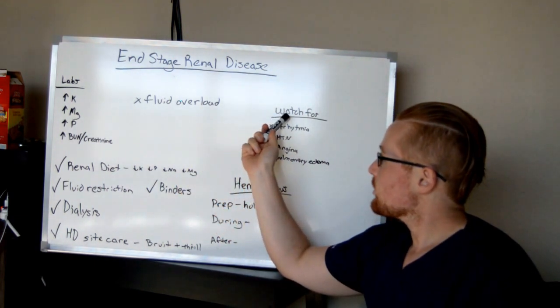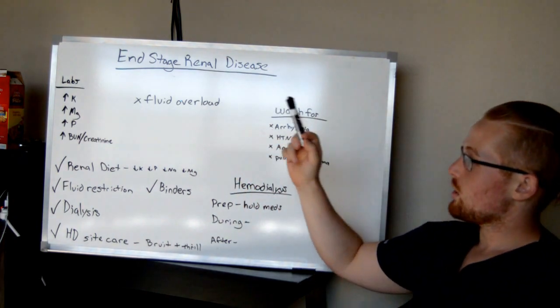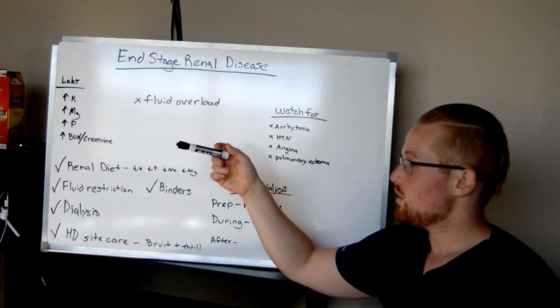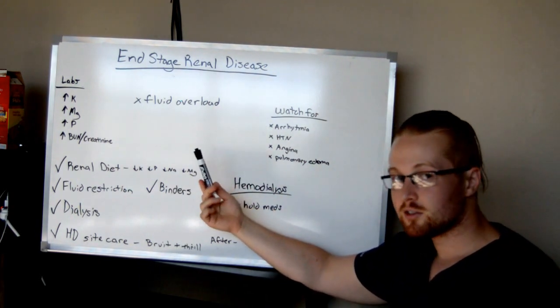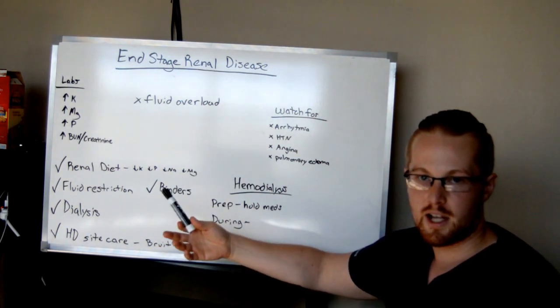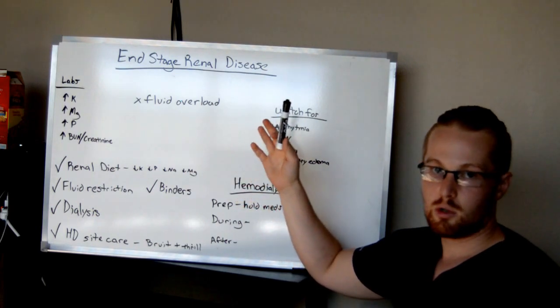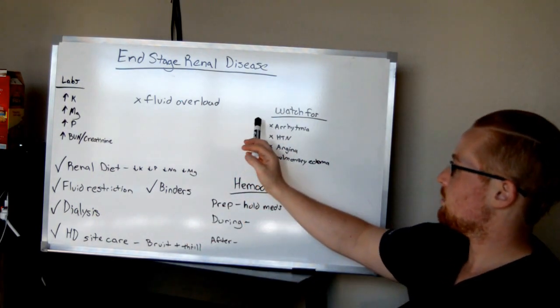So, what do you want to watch out for for end-stage renal patients? You want to watch out for their labs going out of whack. This is shown by them having arrhythmias. If they have too much potassium, they may be having cardiac arrhythmias, such as ventricular fibrillation or V-tach, SVT, you want to watch for arrhythmias. Typically, these patients are on a telemetry monitor.